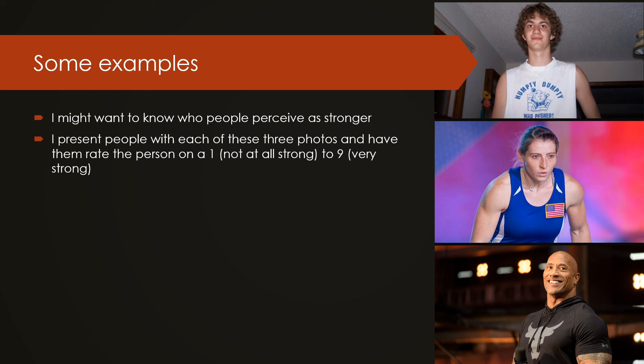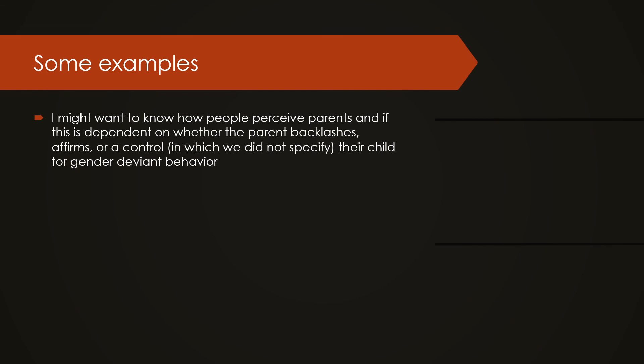This is a one-way ANOVA because I've got three groups — I'm presenting them with one of three photos and measuring their responses on a one to nine Likert-type scale. Another example, and this is the one we're going to actually analyze with statistics, is I might want to know how people perceive parents and if this is dependent on whether the parent backlashes, affirms, or a control condition in which we did not specify their child's gender-deviant behavior. In this study, during a parent-teacher conference, a teacher brings up concerns.